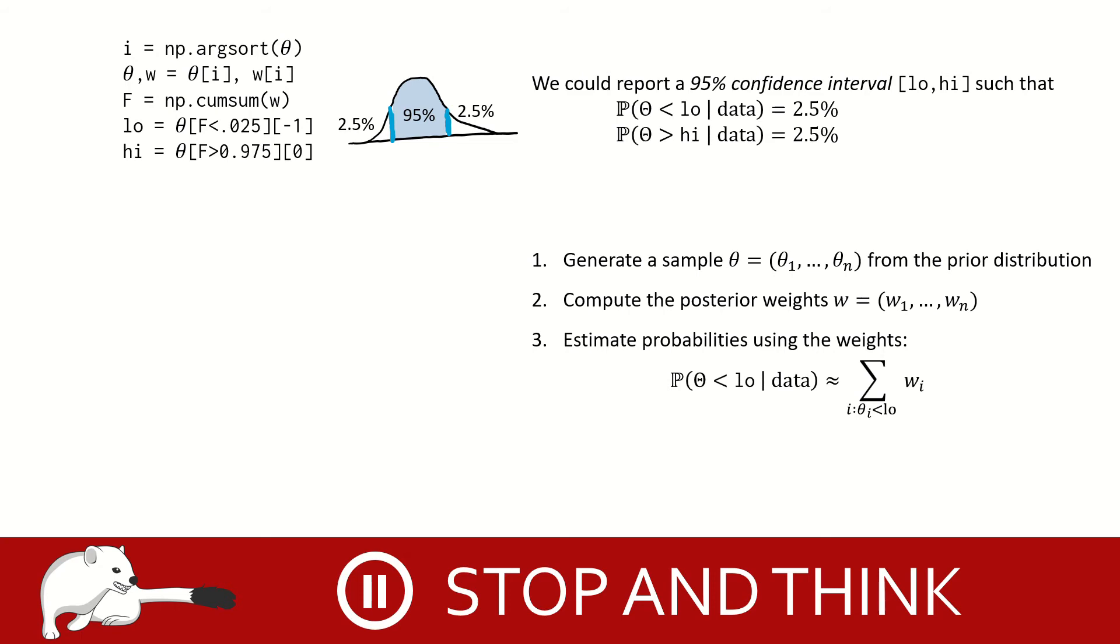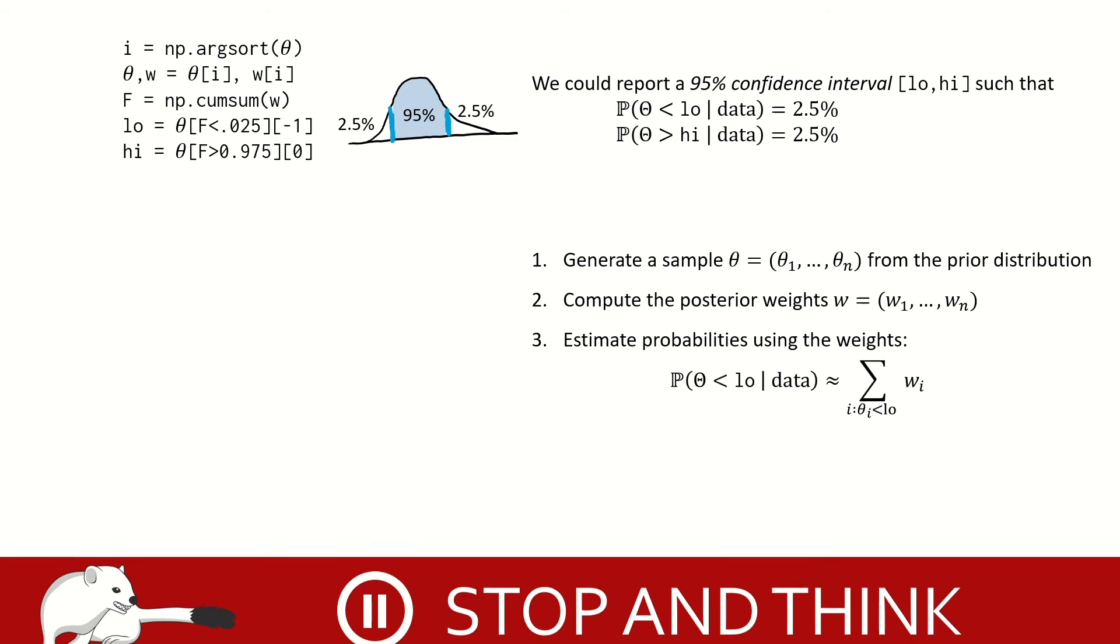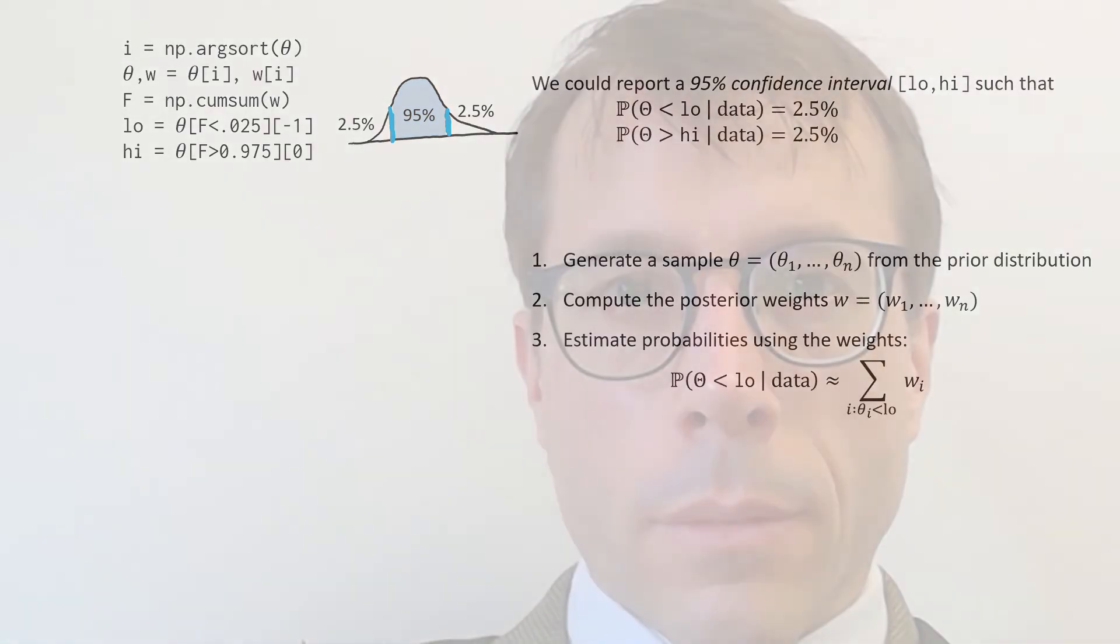When you're ready, press play. So we have nice clean ways to report uncertainty. The tricky thing about uncertainty is that it's really hard to communicate. Most people wouldn't know what to do with an uncertainty estimate if it hit them in the face. Politicians all want to say we're following the science, as if science was capable of producing a single answer. And most politicians simply wouldn't know what to do with a confidence interval.